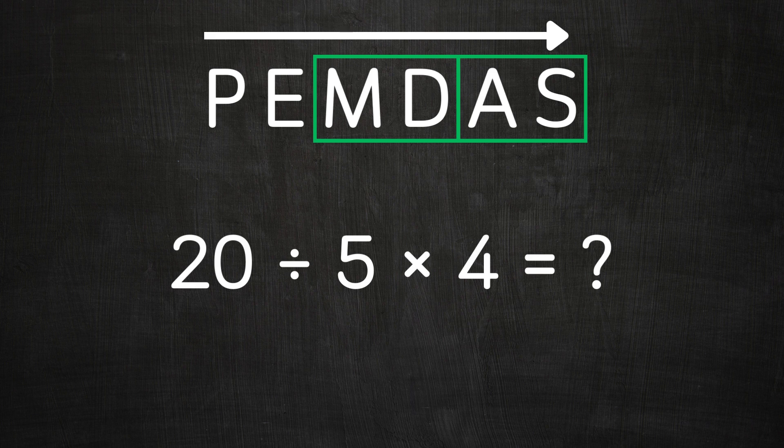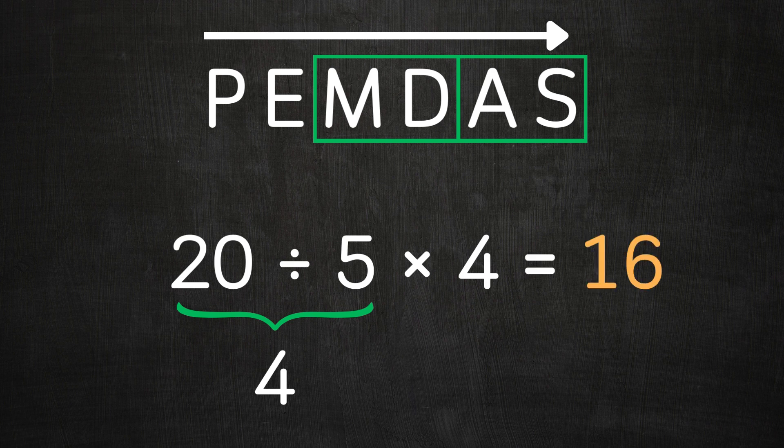Next we have multiplication and division. Now when we are going from left to right, first we have division, so we do the division first. 20 divided by 5 is 4, and then the multiplication: 4 times 4 is 16. So 16 is our answer.